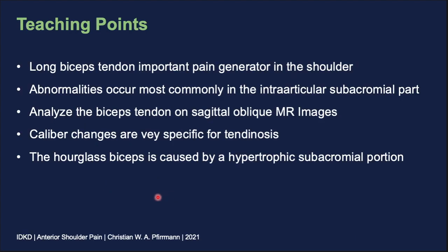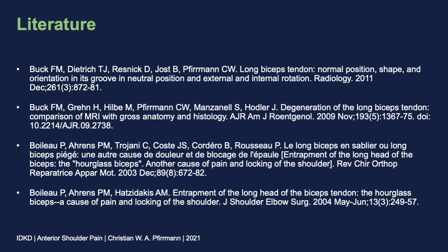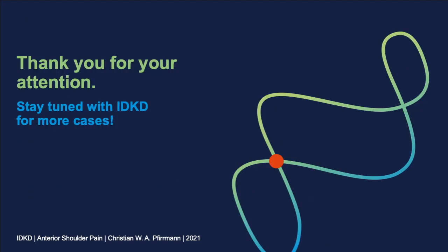A few teaching points to conclude. The long biceps tendon is an important pain generator in the shoulder. Abnormalities occur most commonly in the intra-articular subacromial part; therefore it is necessary to analyze the biceps tendon on sagittal oblique images. Calibre changes are very specific for tendinosis, and the hourglass biceps is caused by a hypertrophic subacromial portion. Here is a list of some papers to read on the topic. Thank you very much for your attention.